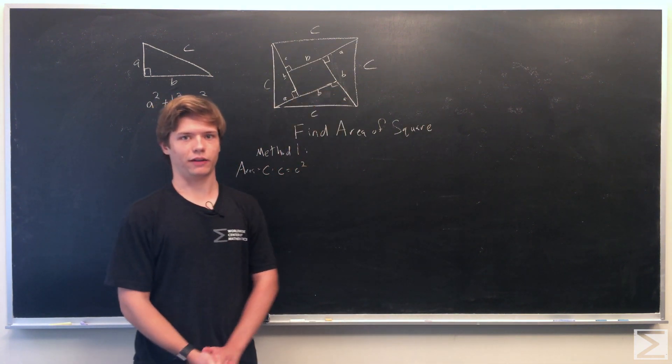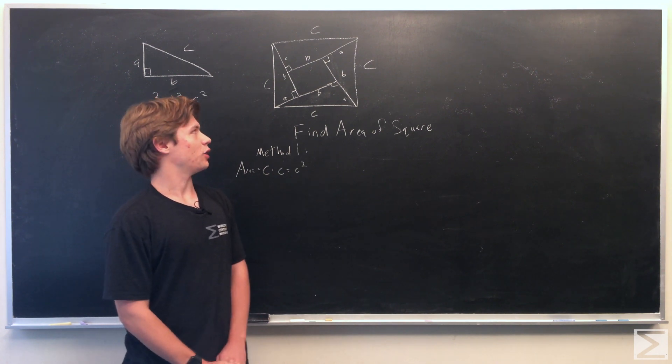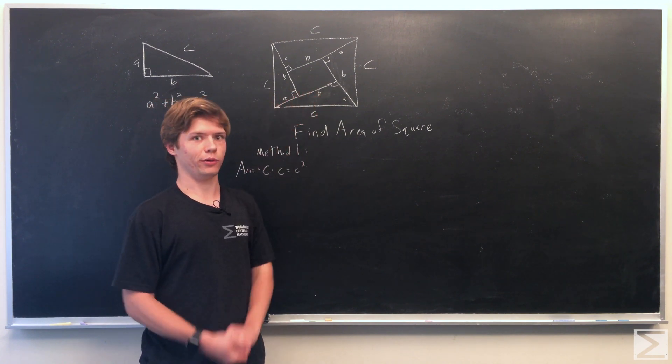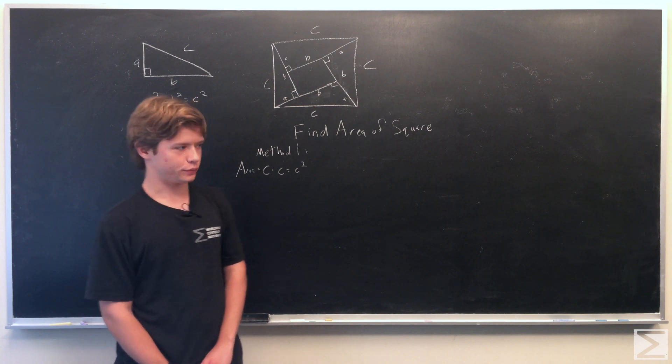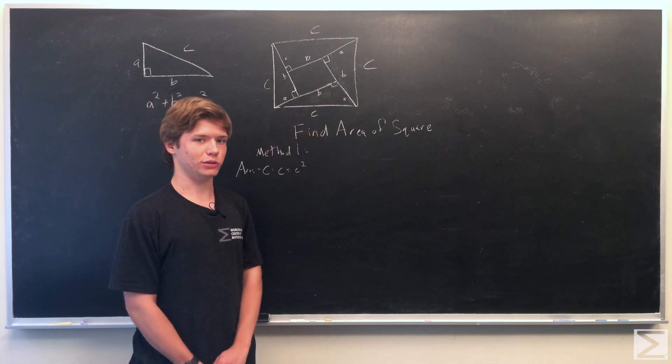And now for the second method we look at what's inside the square itself. So we have the four triangles and in these triangles we know all the sides so that's one part of the area. So we'll just write down what area of the four triangles is equal to.